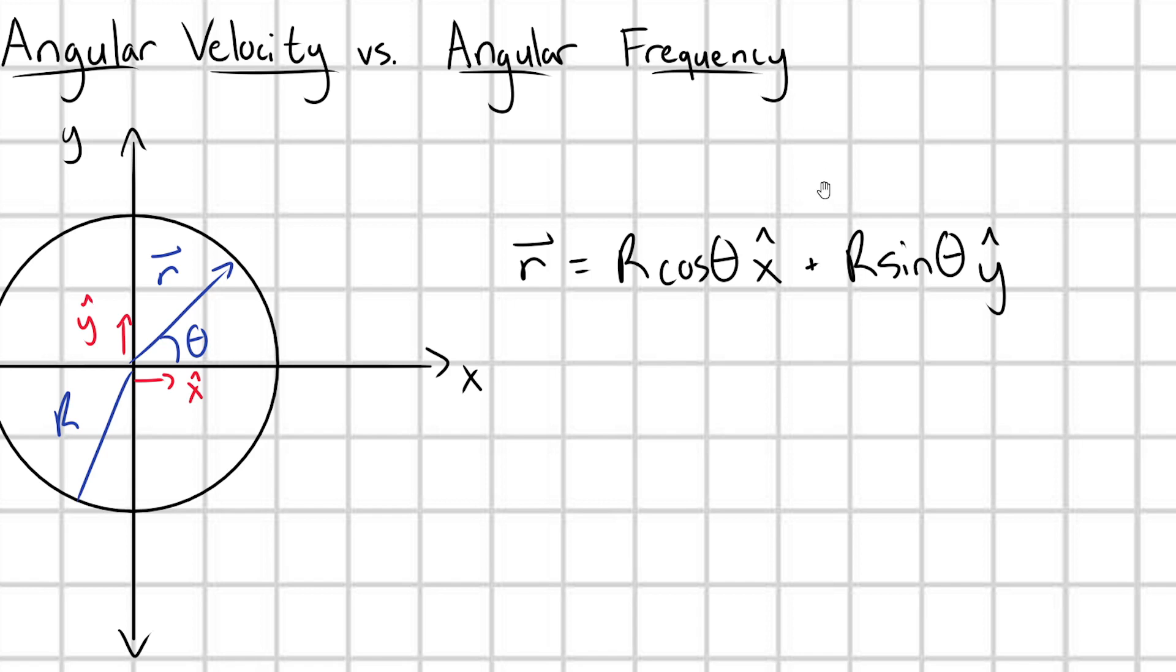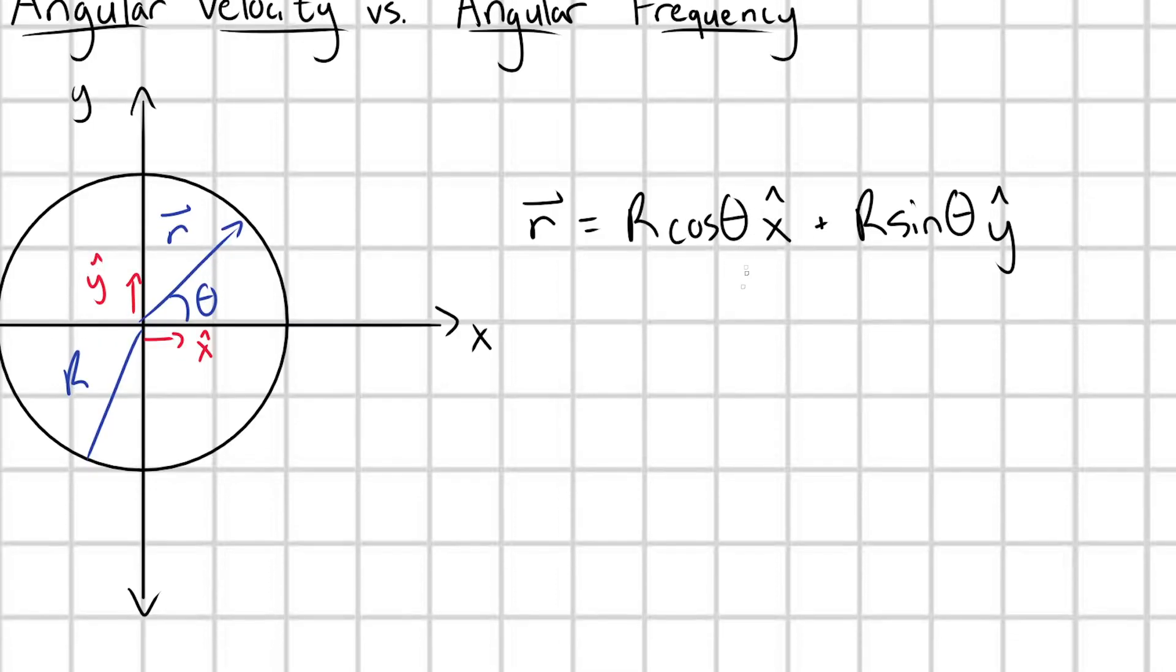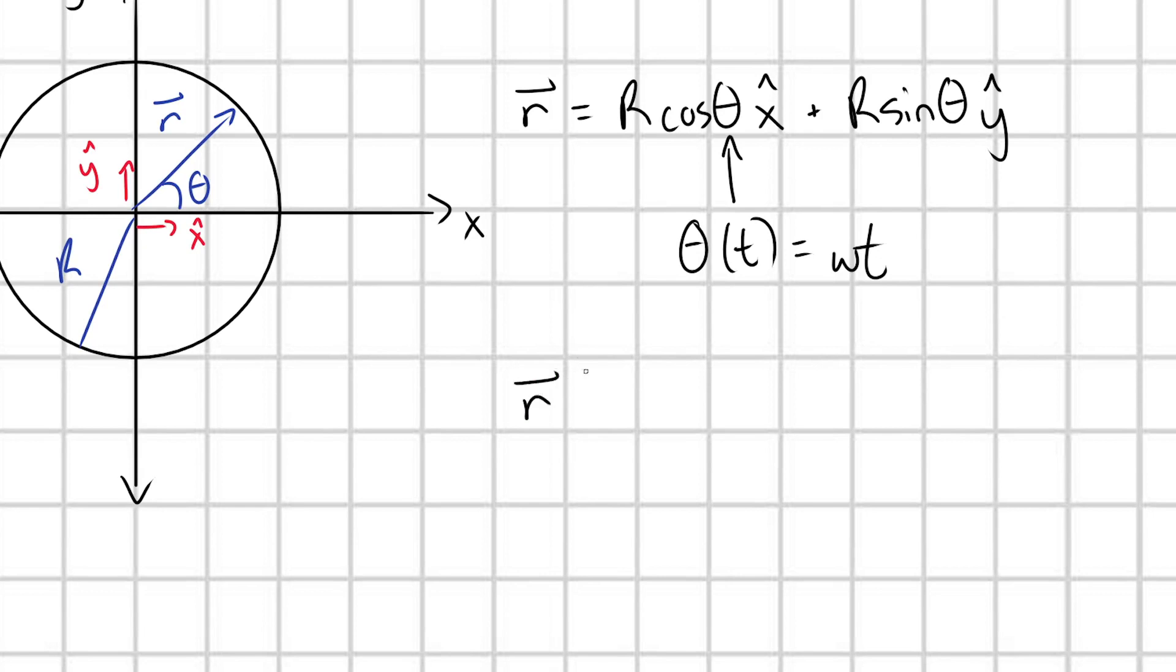So then from here, what I can do is let's make this angle time dependent, let's make this angle theta as a function of time. And in fact, I'm going to parameterize this in a way that this is just equal to some constant omega times t. And if we do this, let me write out r equals, I'll take my capital R outside, then we have cosine omega t x hat plus sine omega t y hat.